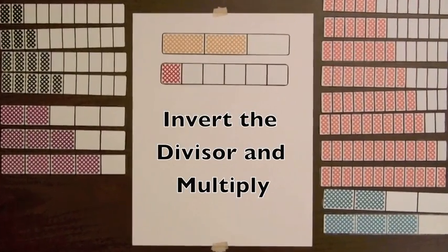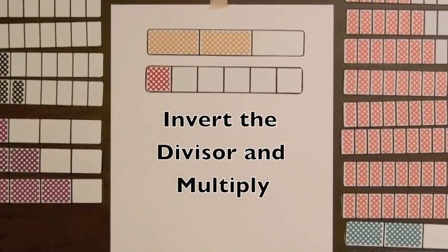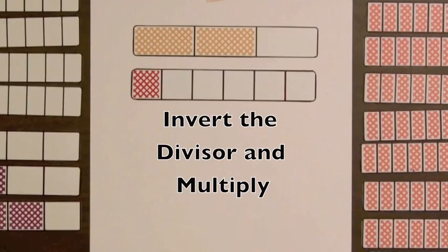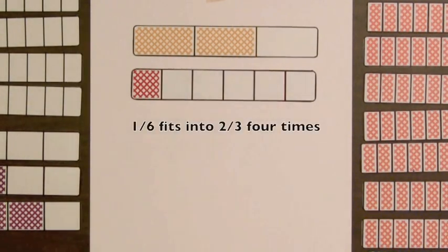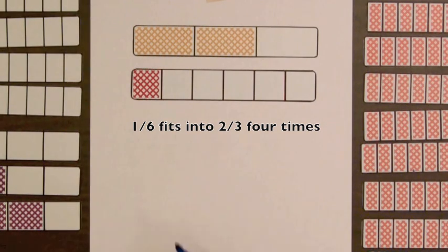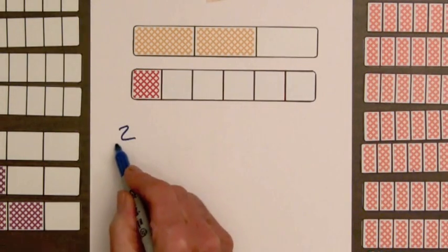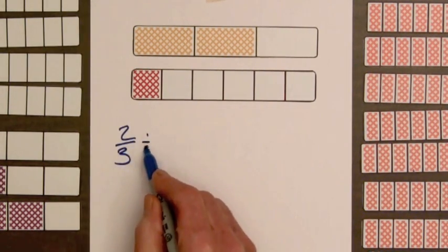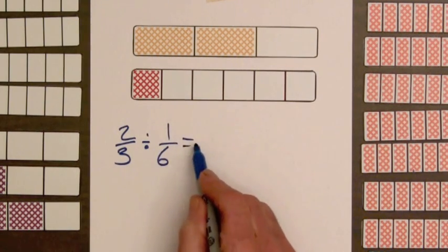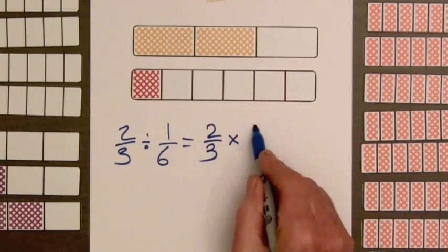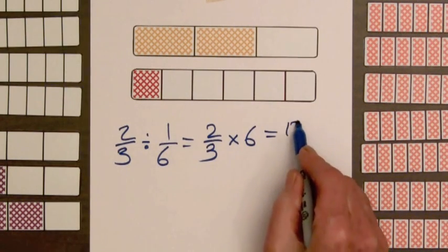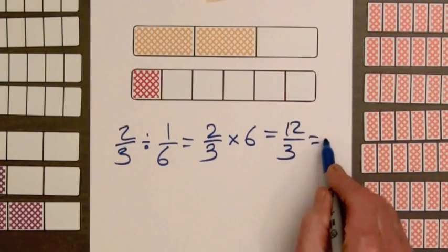Students can now use this invert and multiply process on the results with the bars that were showed earlier in this video. We saw that one-sixth fits into two-thirds four times. Now we can use the invert and multiply rule. Two-thirds divided by one-sixth is going to be two-thirds times the reciprocal of one-sixth. This is going to be twelve over three, and this is equal to four.